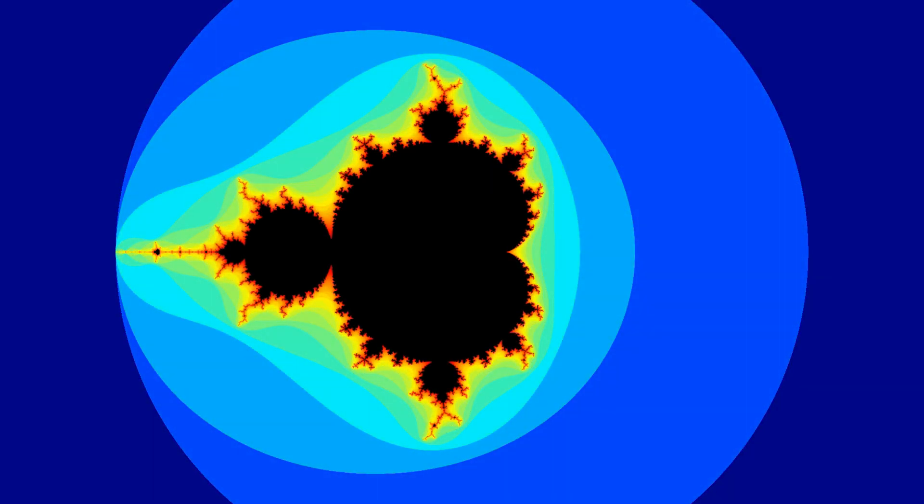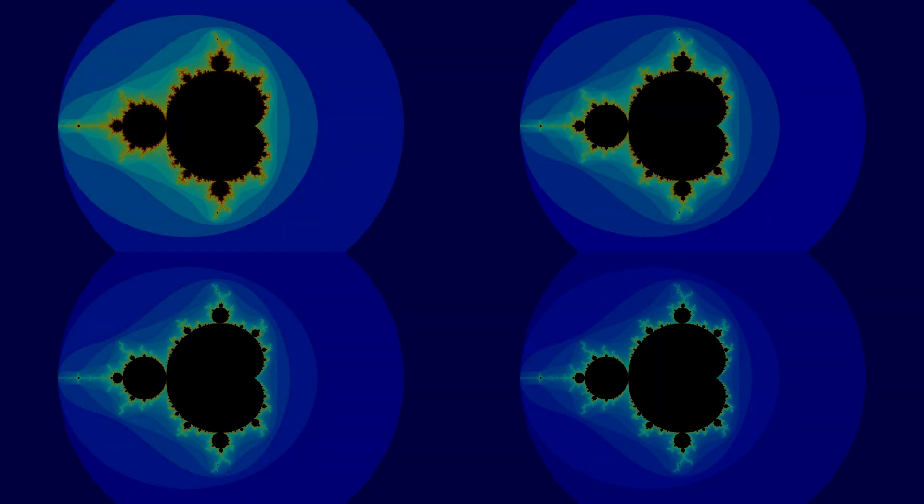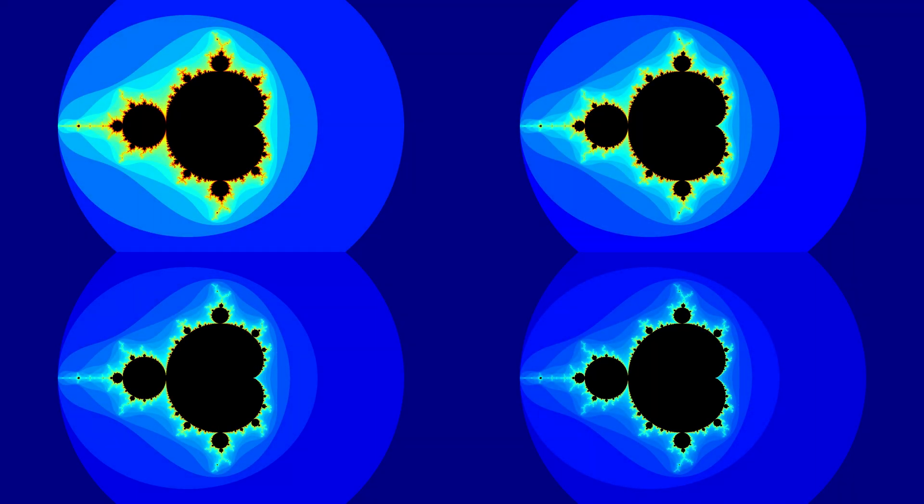For easier comparison, the screen is split into four sections. In each of these sections, we will zoom into our location simultaneously.